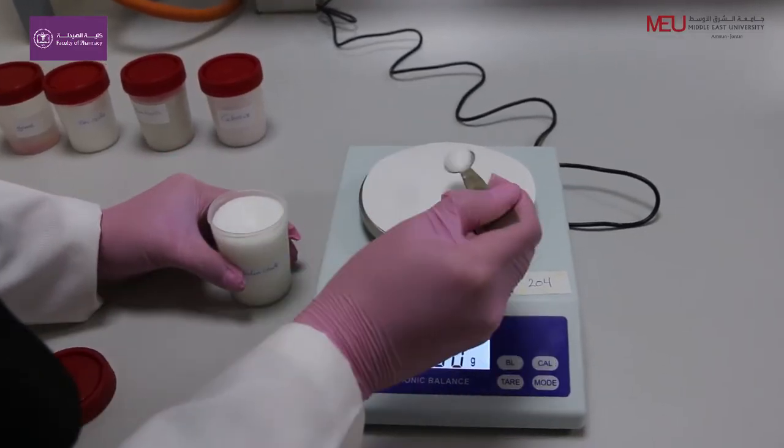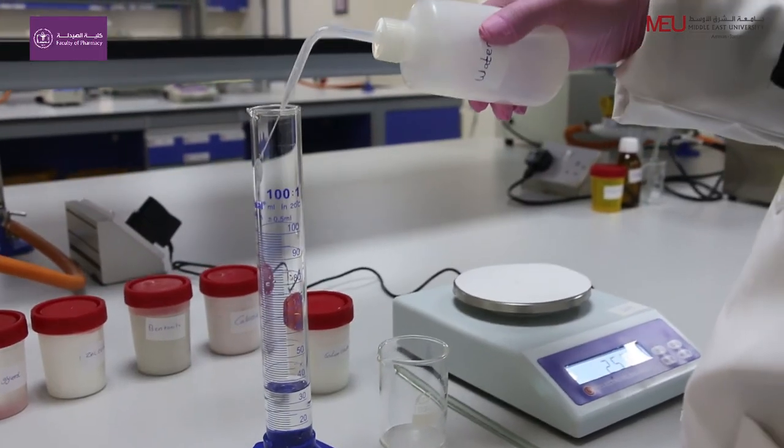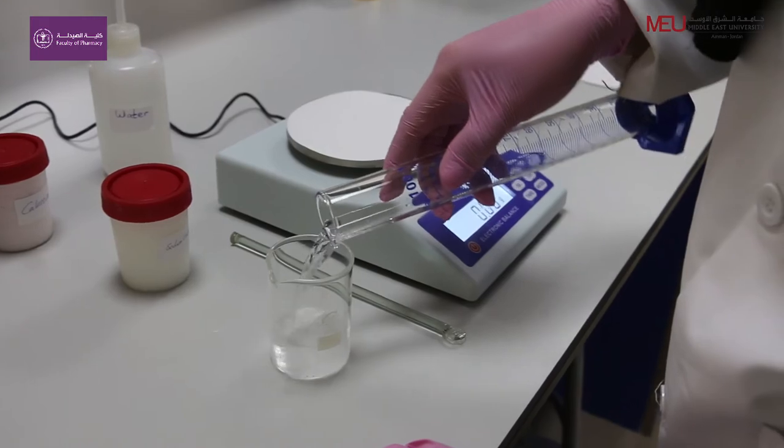Prepare sodium citrate solution by mixing 2.5 grams in about 35 ml of purified water. Here sodium citrate is used as a flocculating agent.